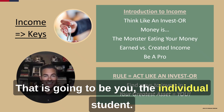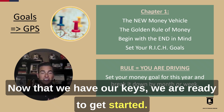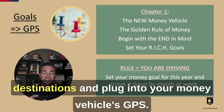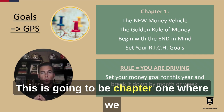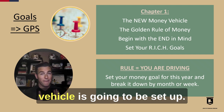Now that we have our keys, we are ready to get started. But before you go anywhere, you've got to set some destinations and plug into your money vehicle's GPS. This is going to be Chapter 1, where we start to introduce how the new money vehicle is going to be set up. Pensions and social security are not going to be a reliable source for your financial freedom.